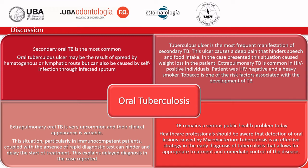While the constant flow of saliva and its antibacterial properties protect against tubercle bacilli invasion of the oral mucosa, local trauma, poor hygiene, and inflammation may promote infection. The case report presents several features that coincide with the literature. Tuberculosis ulcer, which most often affects middle-aged individuals and the elderly, is the most frequent manifestation of secondary TB. This ulcer causes deep pain that hinders speech and food intake.